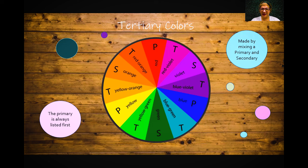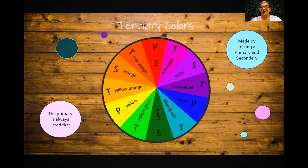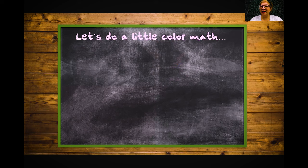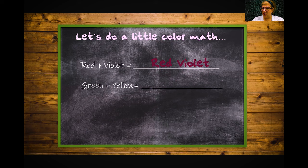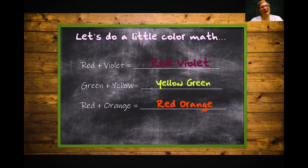Tertiary colors are made by mixing a primary and a secondary color together — and the primary is always listed first. So you have red-orange, red-violet, yellow-green, yellow-orange, blue-green, blue-violet. You're going to start seeing these on color tubes — RV for red-violet, YG for yellow-green. The number on the tube is the level; the letters are the tones. The first tone listed is always the more dominant color.